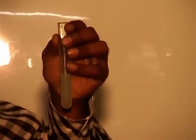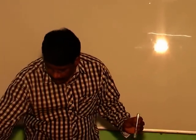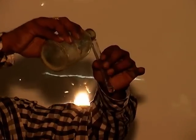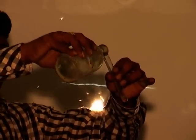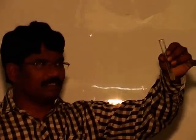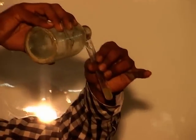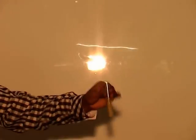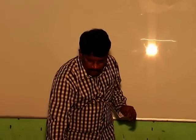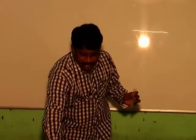For the confirmatory test for zinc, I am taking the salt solution and adding sodium hydroxide. A white gelatinous precipitate is formed. If we add more sodium hydroxide in excess, the precipitate dissolves completely. If the precipitate dissolves on adding excess of the reagent, then zinc ion is confirmed.